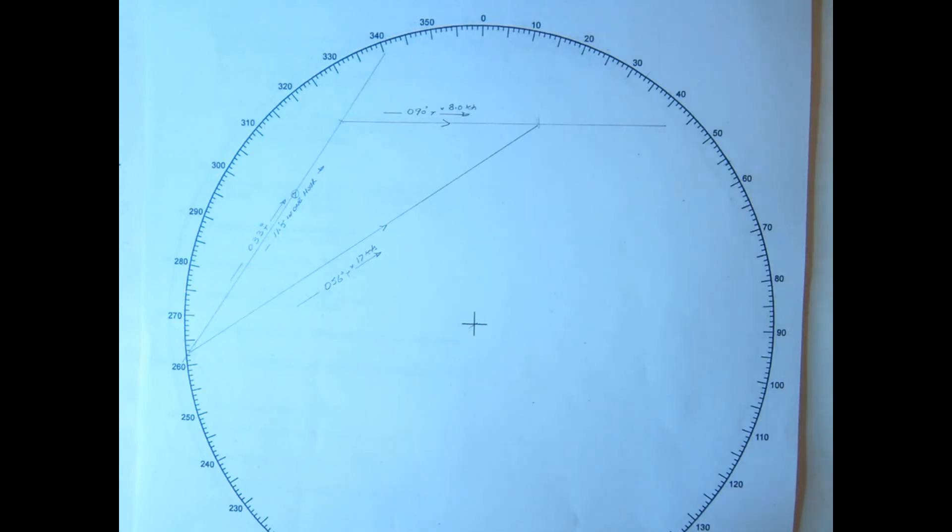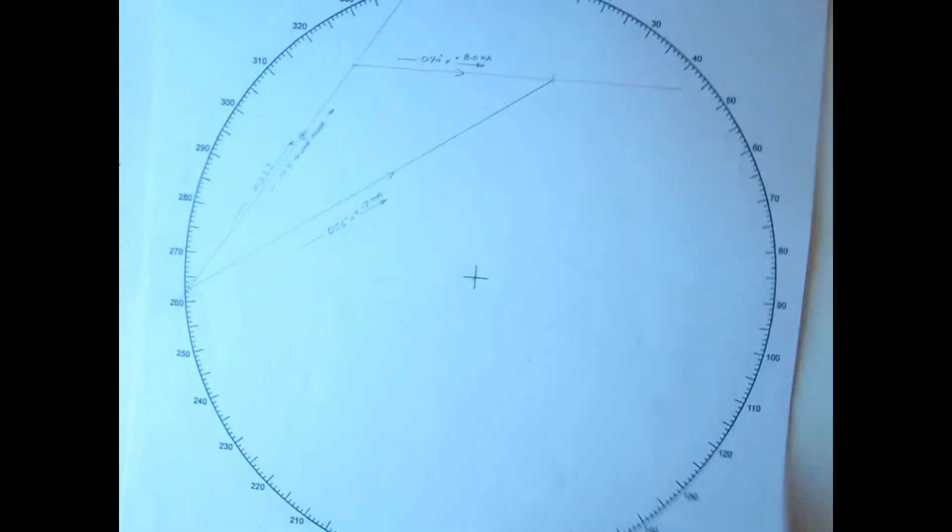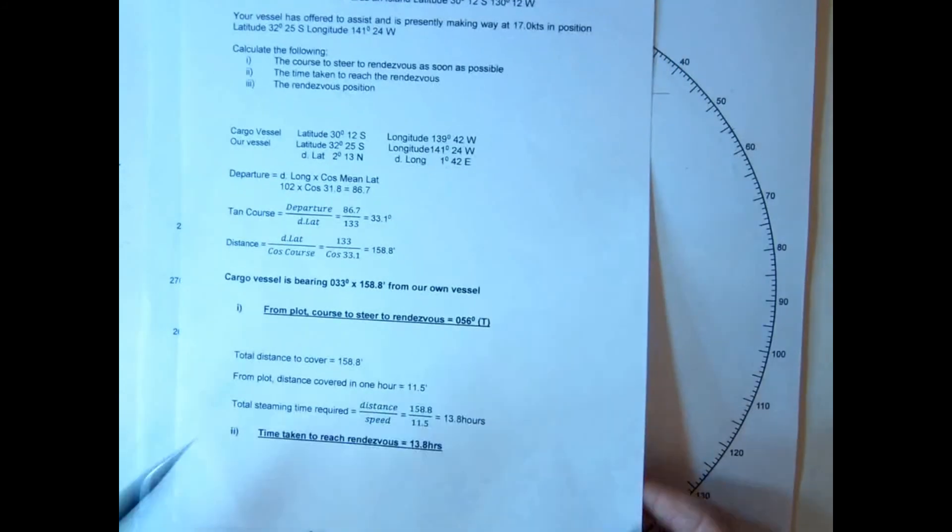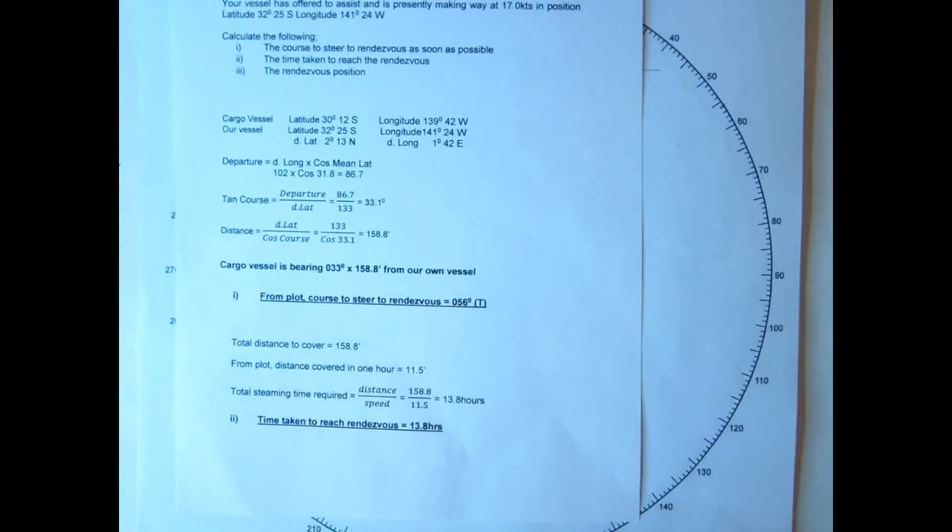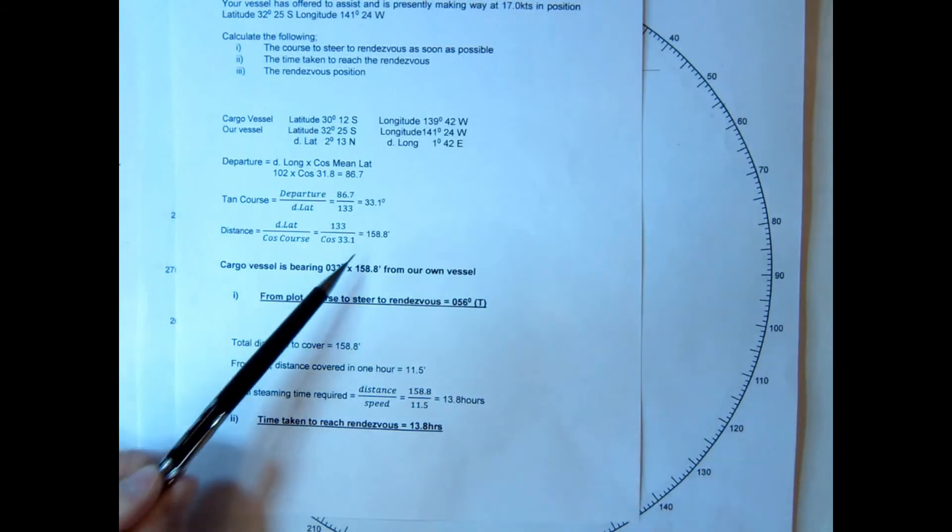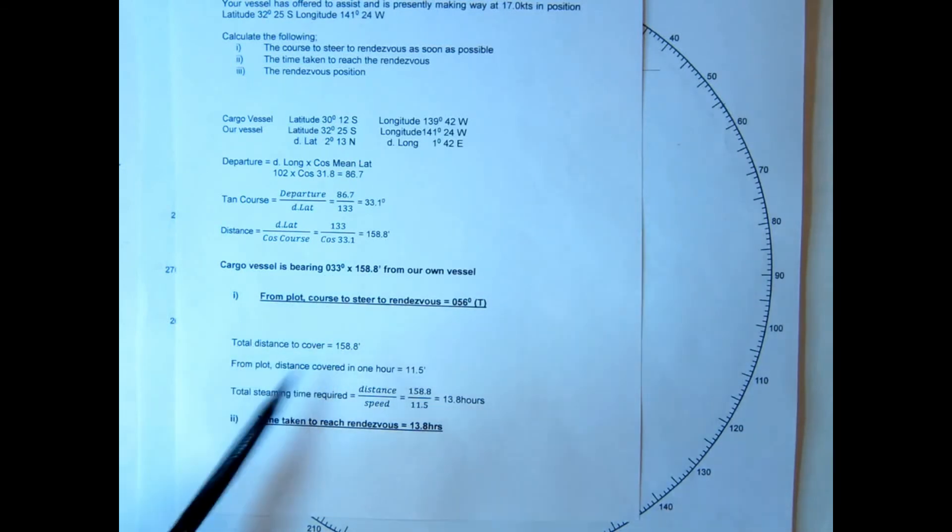Okay, so let's have a look at the working out there. So from the plot, 056 was our course, we've to cover 158.8 miles. In one hour, as we've just seen, we do 11.5 miles, so it's going to take us 13.8 hours. So the time to reach the rendezvous position is indeed 13.8 hours.